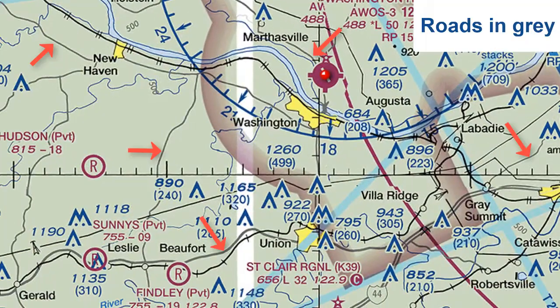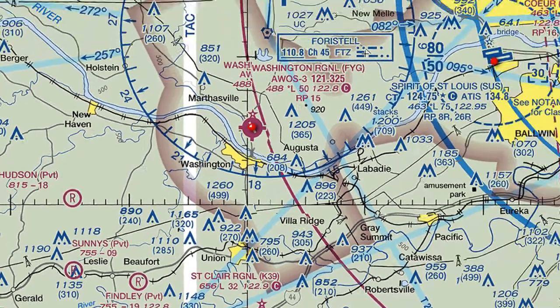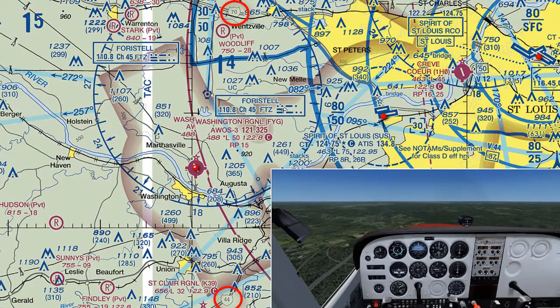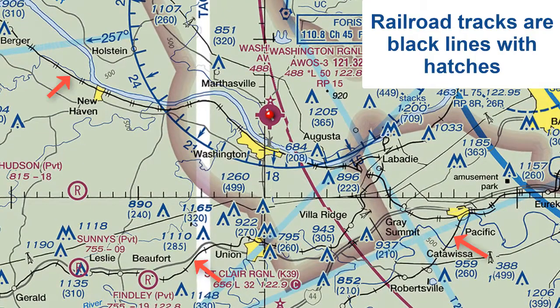Sometimes following roads can be helpful, especially interstates. Here we see interstates 70 and 44 that come out of St. Louis. You can also use railroad tracks, depicted as black lines with hatch marks going across them.